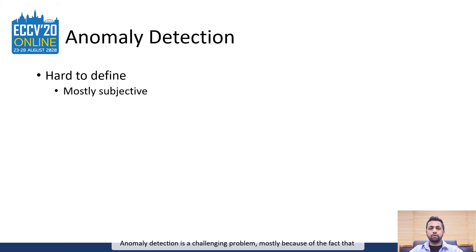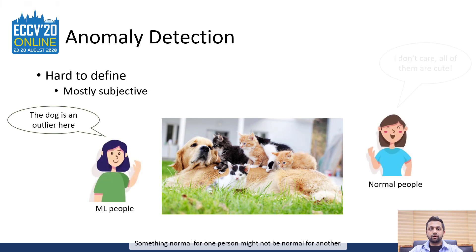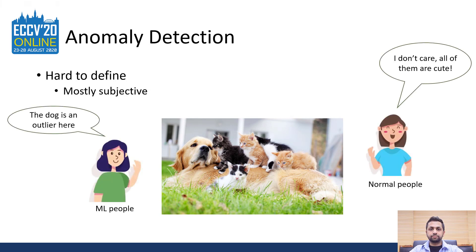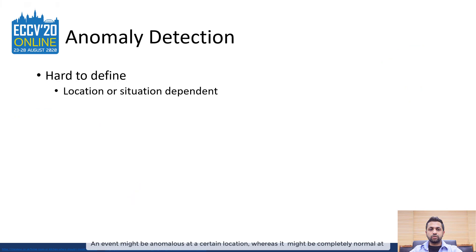Anomaly detection is a challenging problem, mostly because of the fact that it is extremely subjective. Something normal for one person might not be normal for another. While this problem might be solved by developing a consensus among humans, there is another major issue which makes it hard for machine learning frameworks to learn to detect anomalies. An event might be anomalous at a certain location, whereas it might be completely normal at other locations.